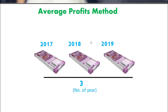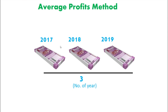The first one is the average profit method. We will discuss how the average profit method is used for goodwill calculation.